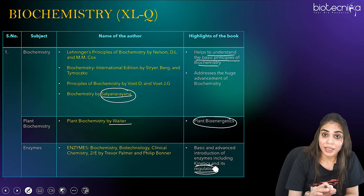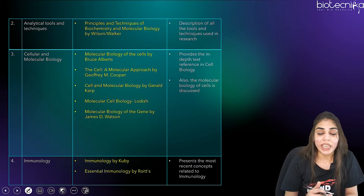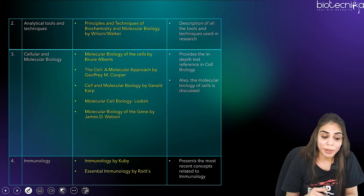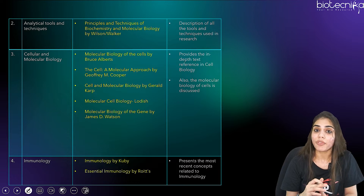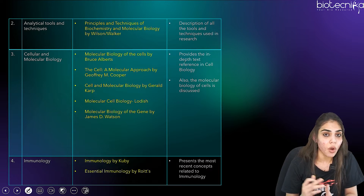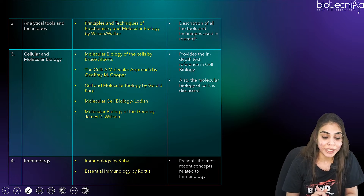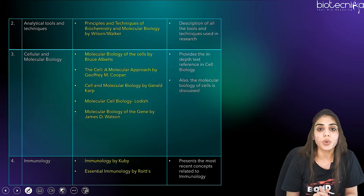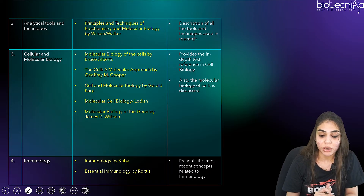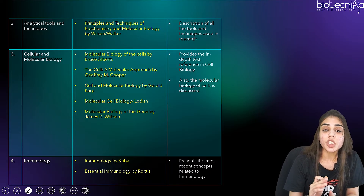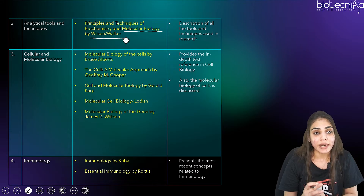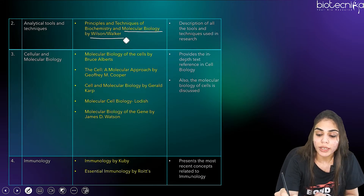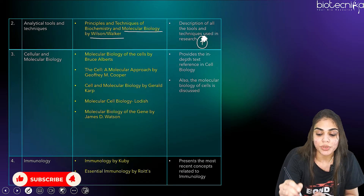The second part included under biochemistry is analytical tools and techniques, meaning you have to cover methods in biology and all tools and techniques needed for research. For this, the best reference book is Principles and Techniques of Biochemistry and Molecular Biology by Wilson and Walker, which provides a description of all the tools and techniques used in research.